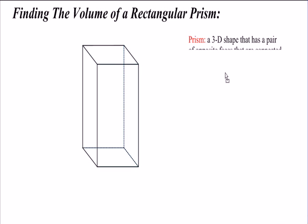Well, a prism is a 3D shape that has a pair of opposite faces that are connected by parallel lines at the vertices. Now, in this case, we have two rectangular bases that are opposing each other. They also have vertices that connect these two bases with parallel lines.